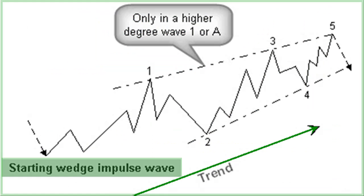The starting wedge impulse wave can only appear in waves 1 or a correction wave A. There may be at first some confusion when wave 3 within the starting wedge impulse wave is seen as an extension wave. You must recognize the starting wedge impulse wave at the start of wave 5, by drawing the wedge pattern between lines 1-3 and 2-4. The starting wedge impulse wave 5 is really just the top of a new wave 1 of a higher order. The wave that follows is not an extended impulse wave 3 up, but a correction wave 2 down. This pattern has 5 waves, with price moving between two converging lines — a wedge pattern.